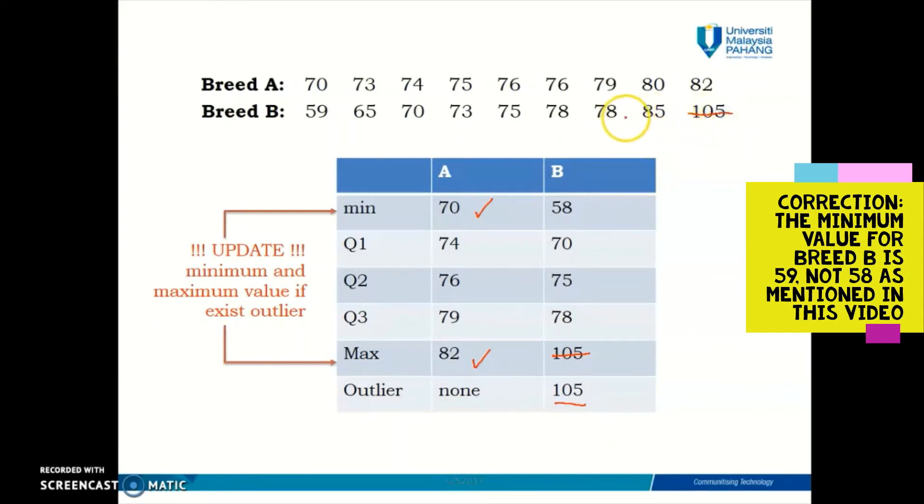Since 105 has been excluded, the next largest number is 85. 85 is not an outlier because if you can still remember, the upper boundary for breed B is 90. Since 85 is smaller than 90, it shows that 85 is not an outlier, so the maximum value here is 85. The minimum value remains the same at 58 since it's not an outlier. Again, the minimum and maximum values in box plots are the minimum and maximum values by excluding all outlier values.